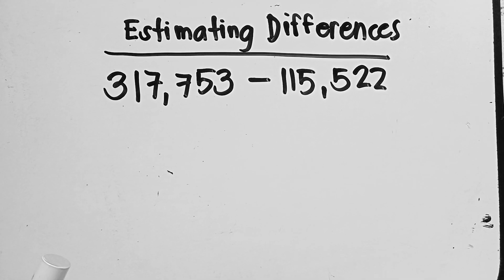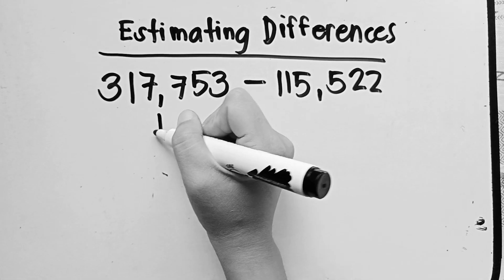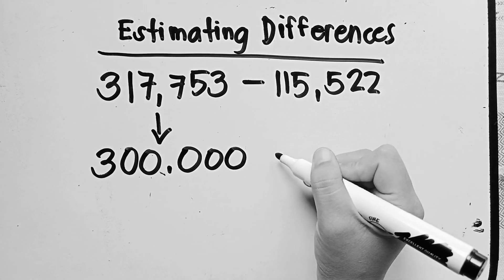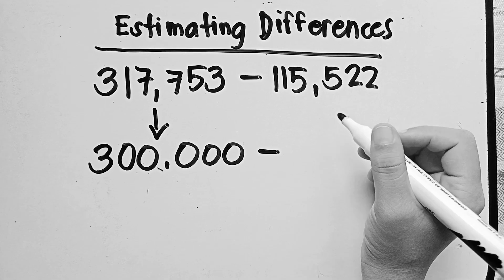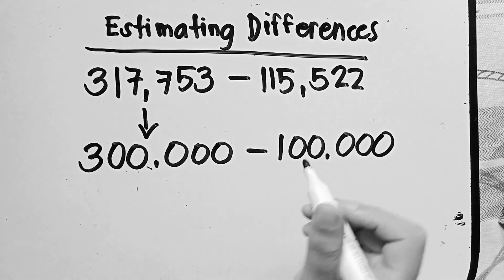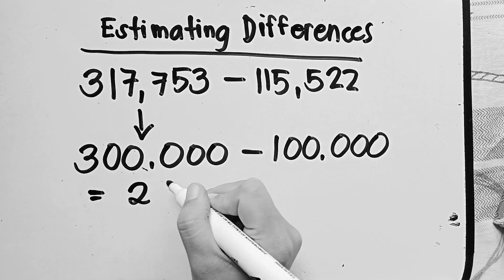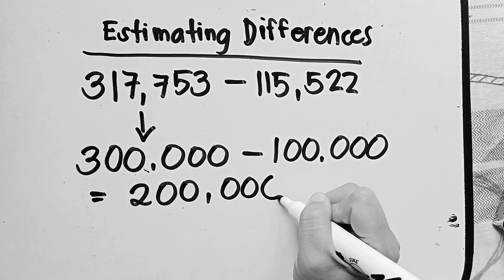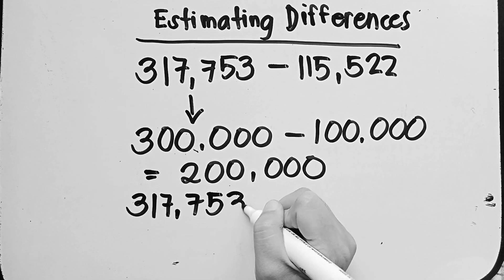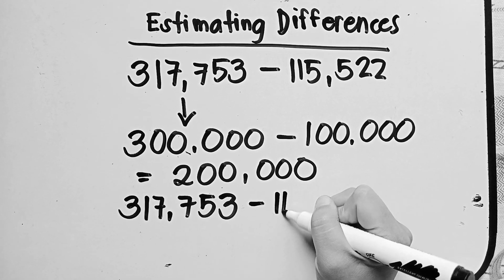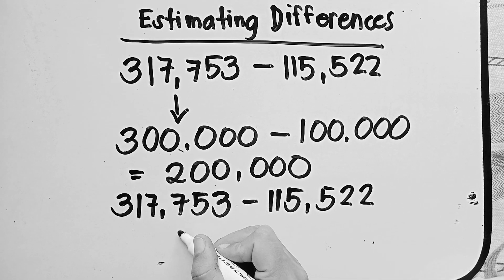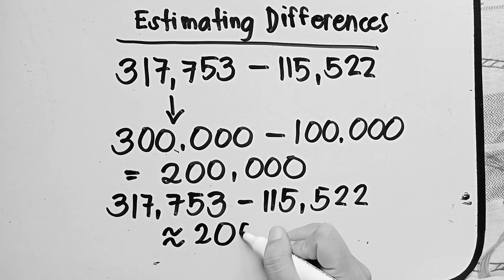If we round to the nearest hundred thousand, 317,753 will become 300,000, and 115,522 will become 100,000. If we subtract the two, we'll get 200,000 — the approximate value of 200,000.